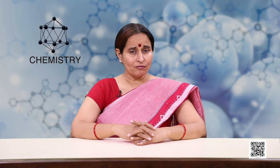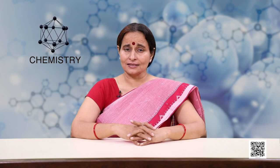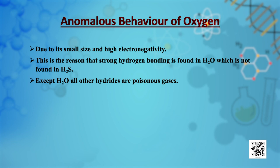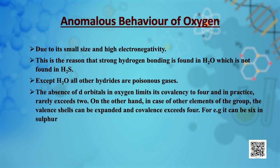This explains why water is liquid and hydrogen sulphide is a gas at standard temperature and pressure. Except water, all other hydrides are poisonous gases. The absence of d-orbitals in oxygen limits its covalency to 4 and in practice rarely exceeds 2, whereas for other elements of the group the valence shell can be expanded and covalency can exceed 4 — for example, it can be 6 in sulphur.